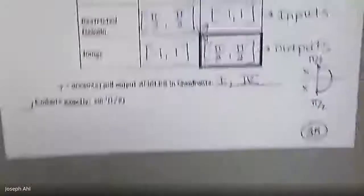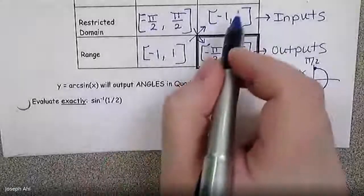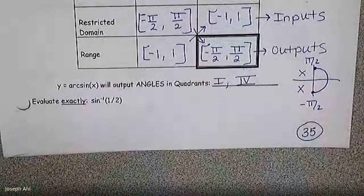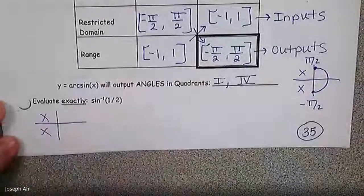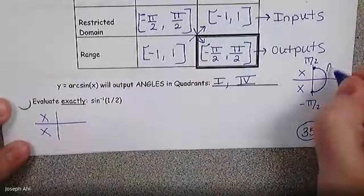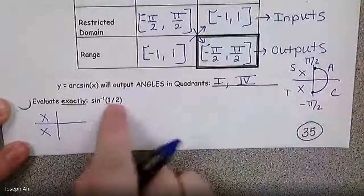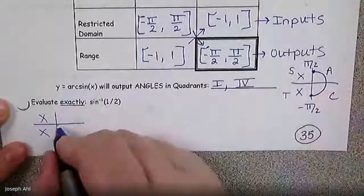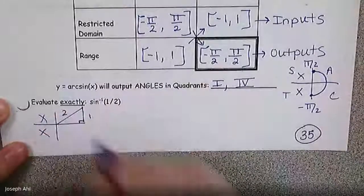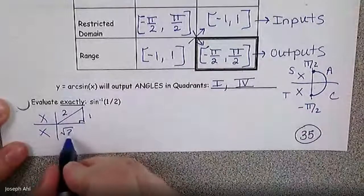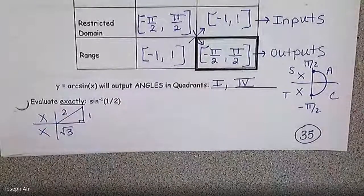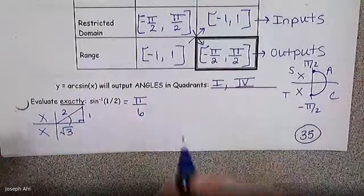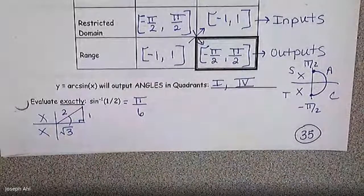Let's talk about how we use this to evaluate. For sine inverse of 1/2 — 1/2 is clearly in the domain. The answer is an angle somewhere from −π/2 to π/2, so not in quadrants 2 and 3. Since this is a positive ratio, sine is definitely positive in quadrant 1. Sine is opposite over hypotenuse, and we do have a special triangle here.